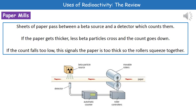Beta radiation is able to pass through the paper, but if the paper gets thicker, we will see a drop in the beta particle count, because obviously if the paper is thicker, fewer beta particles will get through. That's picked up by the detector, which sends a message to the controllers of the rollers, and as a result the rollers squeeze together to make the paper thinner. It just monitors how many beta particles pass through the paper and then moves the rollers accordingly.